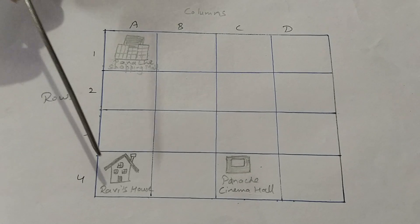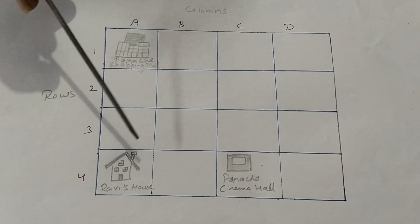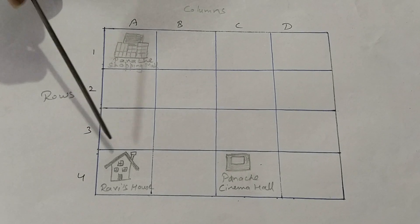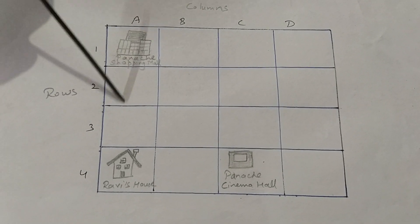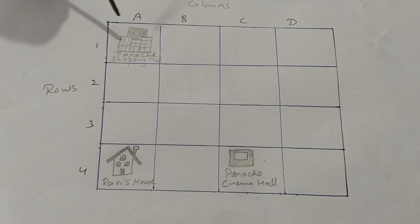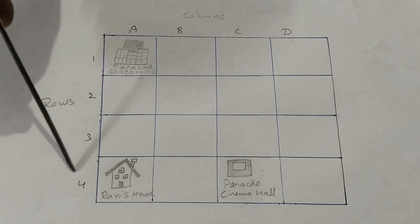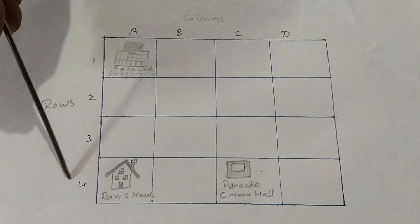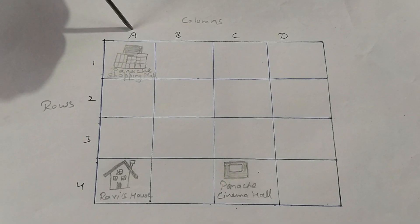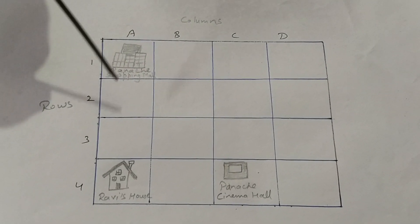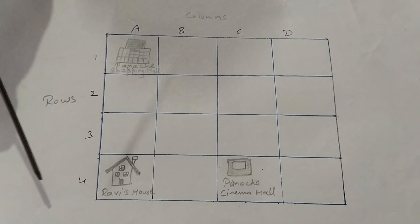Now, if you have to find Ravi's house, it is located in the grid formed in column A. See, Ravi's house is in column A and in which row? Fourth row. This is in the fourth row and column A. So, the name of the grid box is A4.